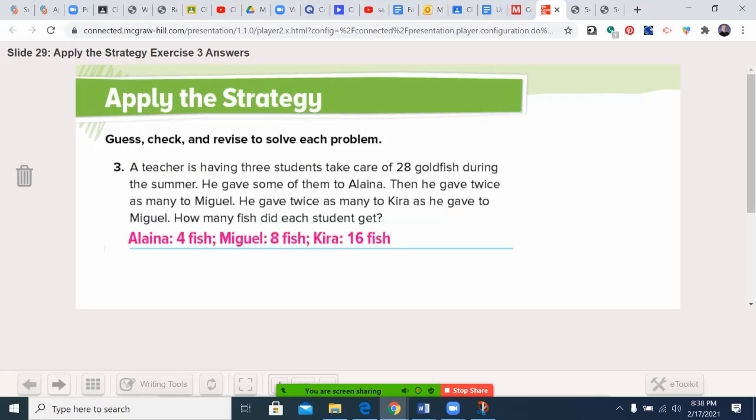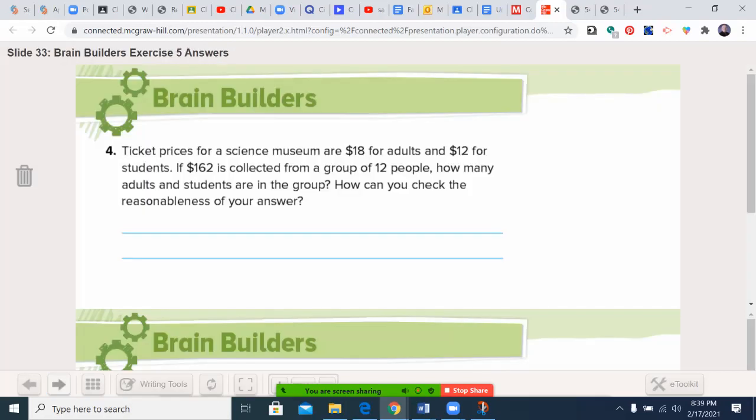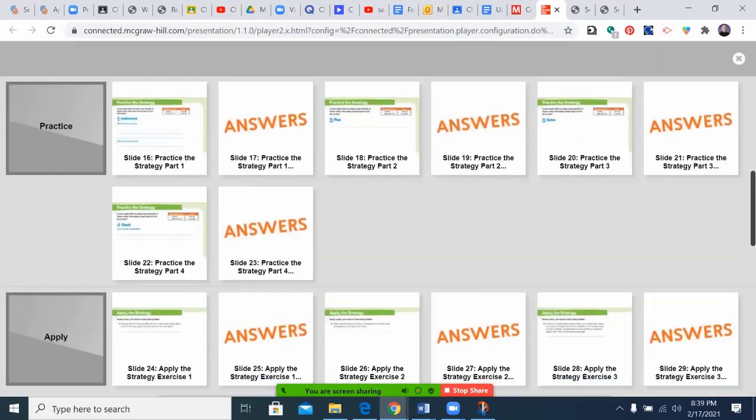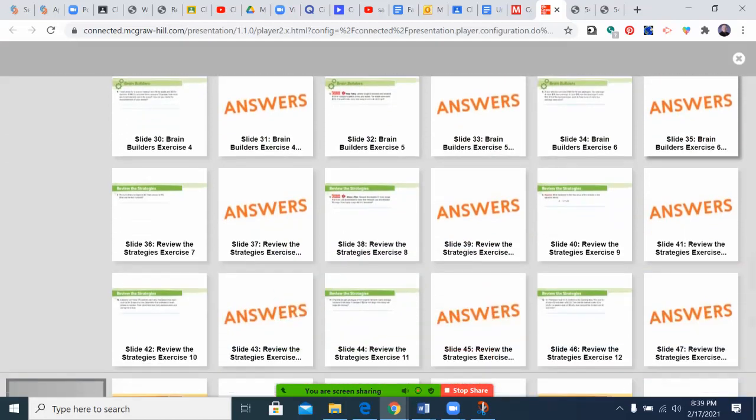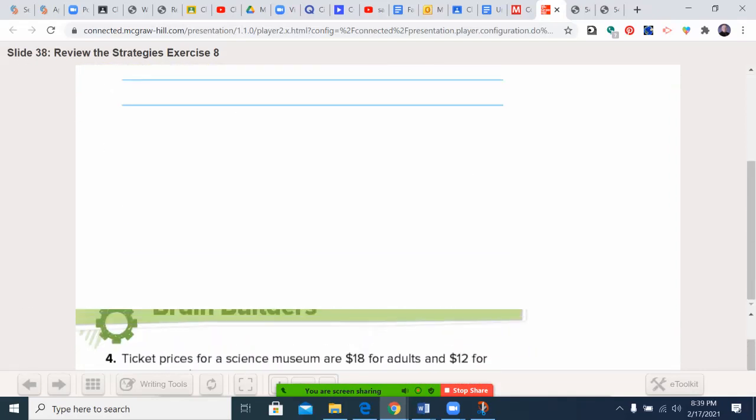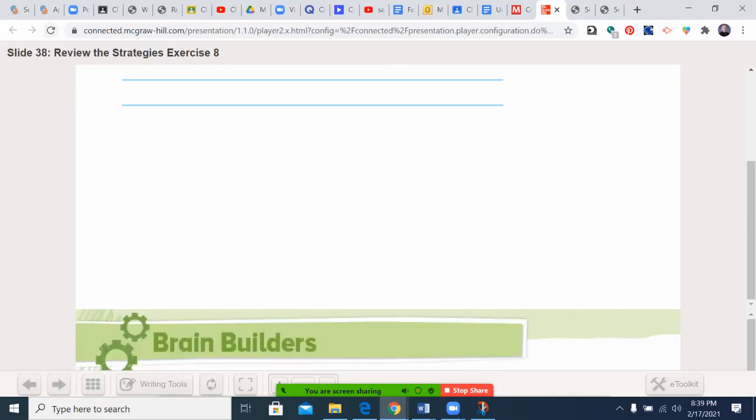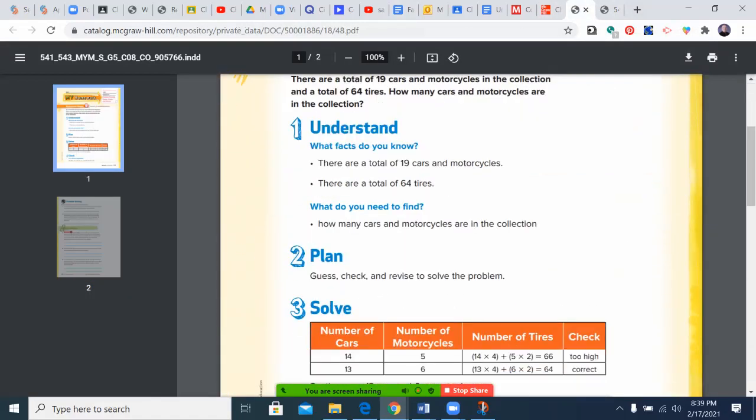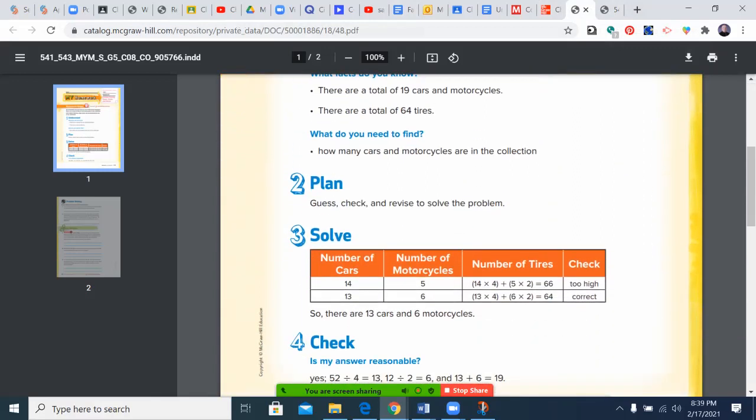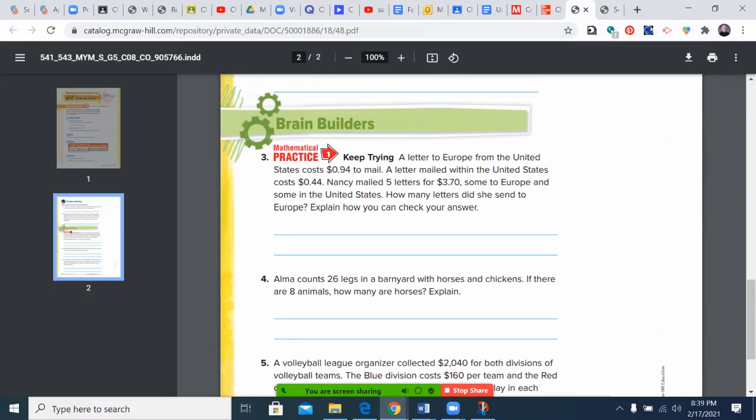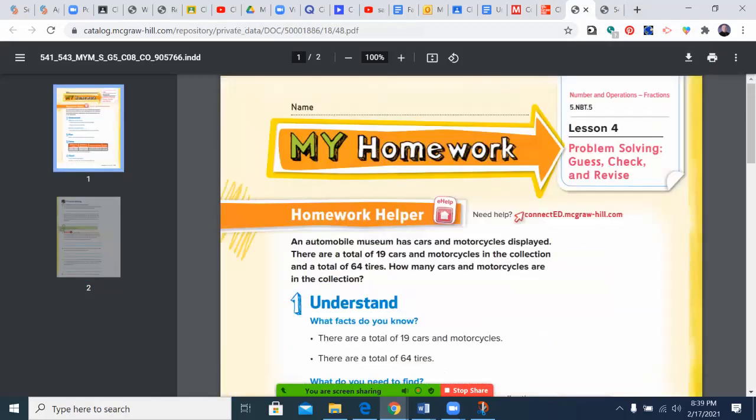Let's bounce ahead. Apparently it doesn't want to go past number four, so I will cheat the system and move it. It is not agreeing with me here. How about we try the homework? It is giving me an issue. On the homework, remember to review your understand, your plan—guess, check, and revise—do your solving and then check your answer. You have five story problems. Remember to read them at least twice so you know what facts you have, what you're being asked, and then go ahead and do it.